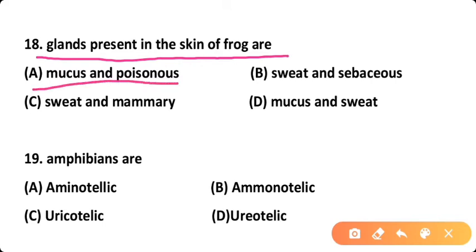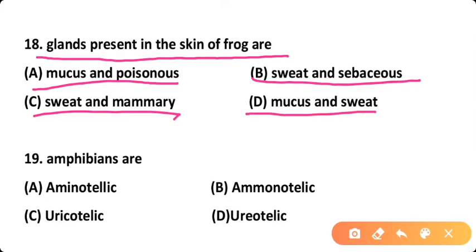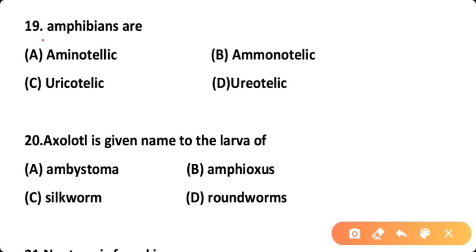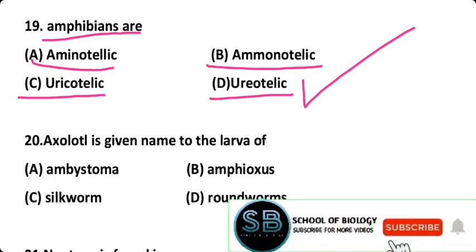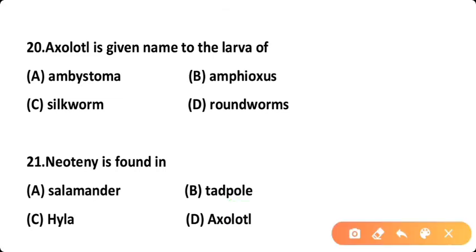Question eighteen: Glands present in the skin of a frog are — Option A: mucus and poisonous glands, Option B: sweat and sebaceous glands, Option C: sweat and mammary glands, Option D: mucus and sweat glands. Correct answer is Option A — mucus and poisonous glands are present in the skin of frog. Question nineteen: Amphibians are — Option A: ammonotelic, Option B: ammonotelic, Option C: uricotelic, Option D: ureotelic. Correct answer is Option D — amphibians are ureotelic, having urea as their nitrogenous waste substance.